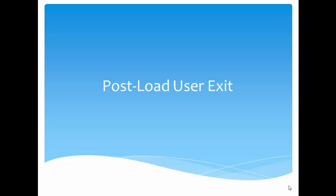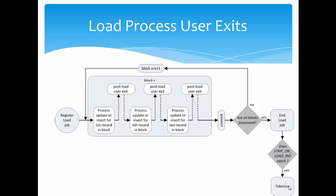This diagram shows the process flow of the load process. The first step is to register the load job. Once you register the load job, the MDM hub will update or insert the record into the base object. The first record will be inserted or updated, and immediately after that the post load user exit will be called. Then the second record will be processed, and after successful processing, the post load user exit will execute again.